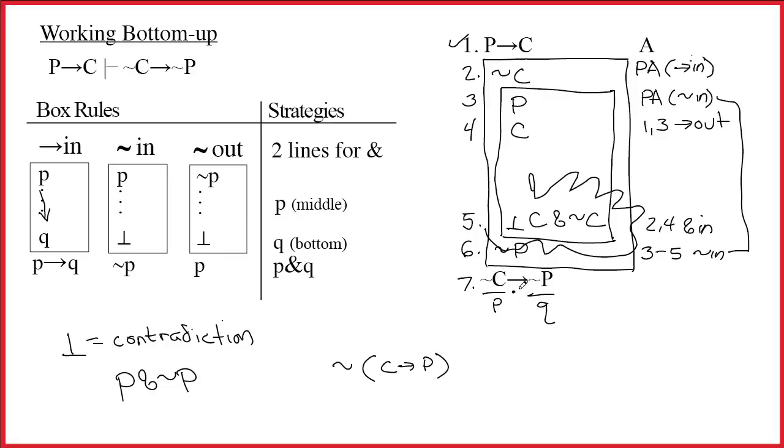What about line 7, tilde C arrow tilde P? Well, the box above it started at 2 and ended at 6. So that's 2 through 6, and then the name of the rule, arrow in. And I notice that there was arrow in up at the PA on line 2, and so once again I get this nice correspondence.